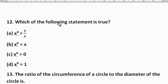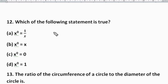Question 12: Which of the following statement is true? Option A: x⁰ = 1/x, Option B: x⁰ = x, Option C: x⁰ = 0, Option D: x⁰ = 1. There is a law that if the power of any number is 0, the answer is always 1. So Option D is the right answer.